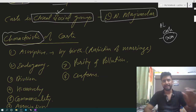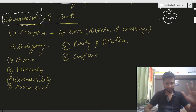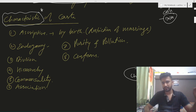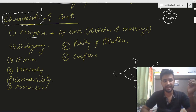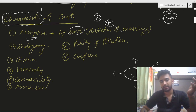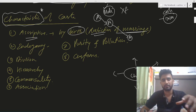Now we move to the characteristics of caste — this is everyone's favourite topic. The first characteristic is ascribed, meaning by birth. If a person belongs to caste A, their child will also belong to caste A, and their grandchild too. We are talking about the male line here, not the female line.